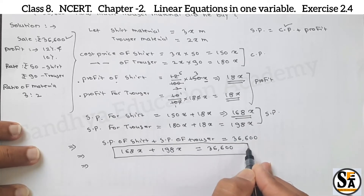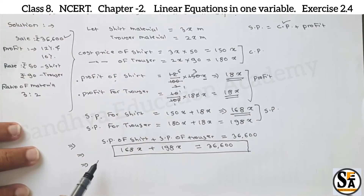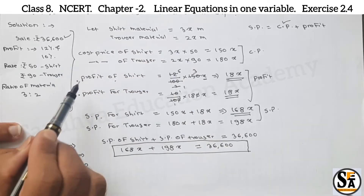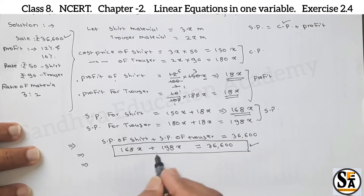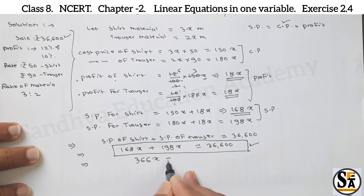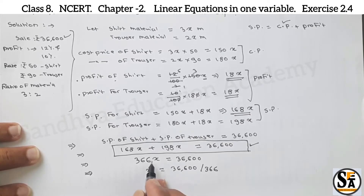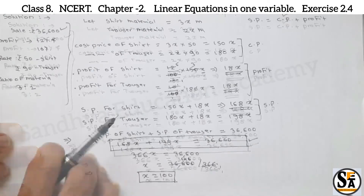To get this equation, we used: shirt material length, trouser material length, the relation 3 to 2, cost price, profit, and selling price. Now solving this equation: adding 168 plus 198 gives 366x equals 36,600. Very simple: x will be 36,600 divided by 366. We can cancel 366, it will be 100. So x value equals 100.